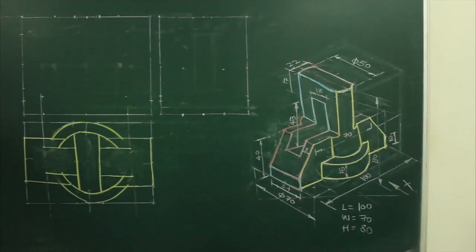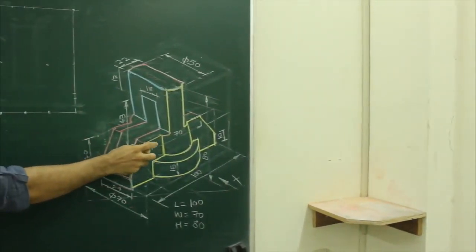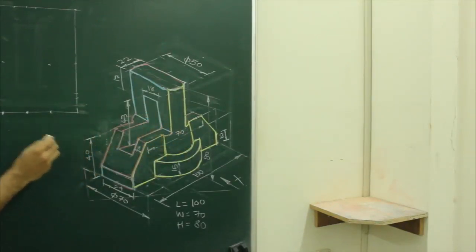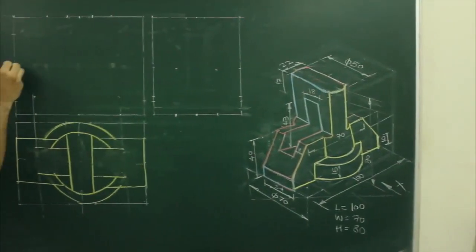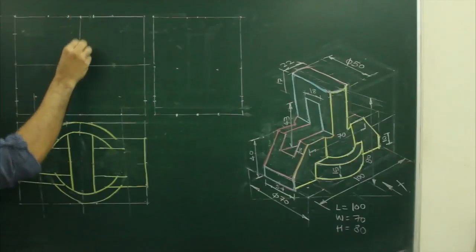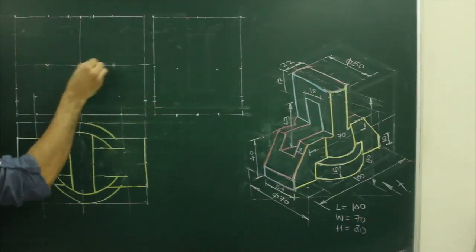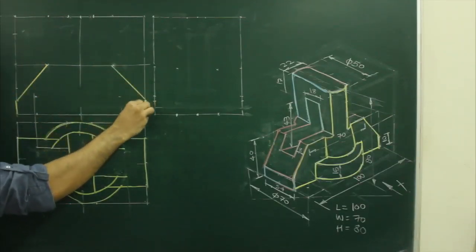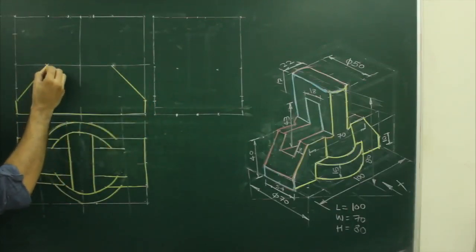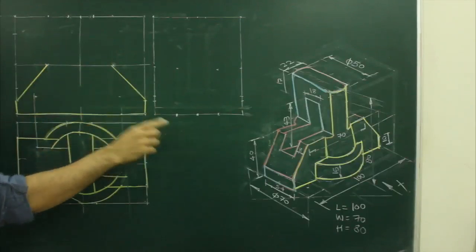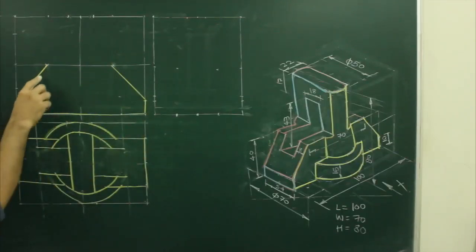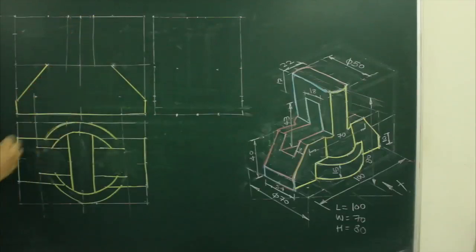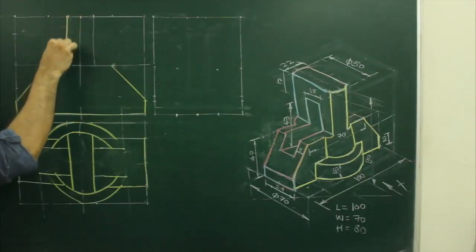Now we will look at the main diagram. First we will draw the slope — they have given 70, so we will put 35 on both sides. Height is 40, so from here we will go up by 40, draw a line, take center, take 35 on both sides, and join this. So we will get the slope diagram.